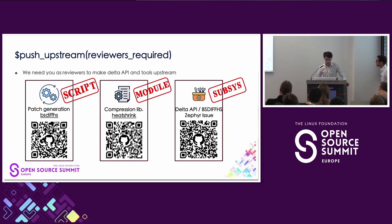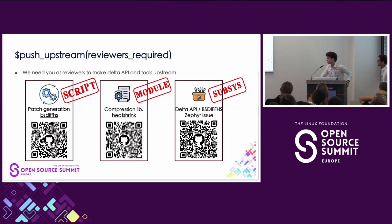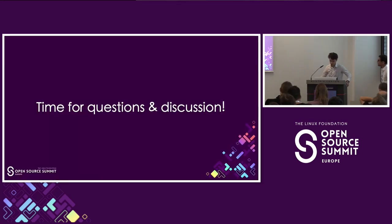The point of our solution was obviously to show you the API we developed, but more importantly we need you as reviewers. We have three different GitHub repositories: the first is for patch generation — the Python script BSDFHS; the second is to add heatshrink as an extended module to Zephyr; and the last one is for the Delta API itself. Thanks for listening — if you have any questions.